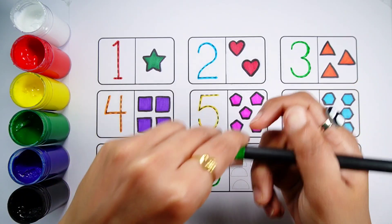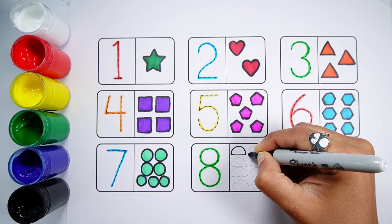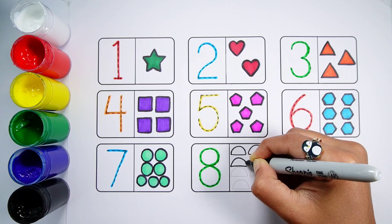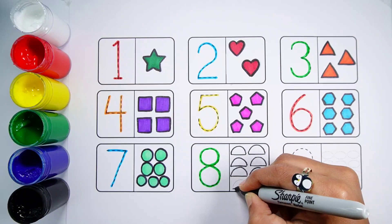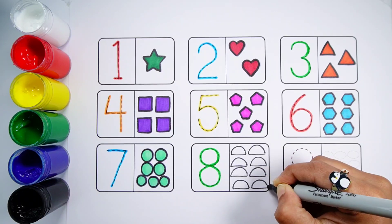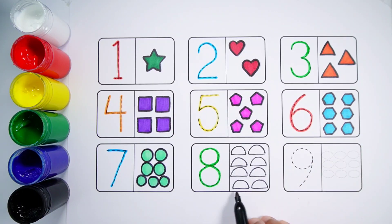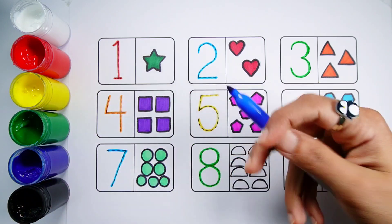Number 8. One, Two, Three, Four, Five, Six, Seven, Eight. Eight Semi Circles. Dark Blue Color.